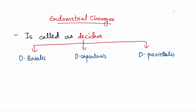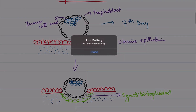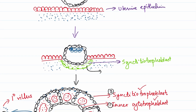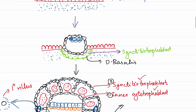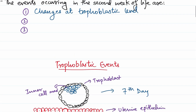The decidua basalis is where the embryo invades — the part of uterus where the embryo invasion occurs during implantation. The decidua capsularis is the endometrium that covers or surrounds the embryo after implantation — the immediate part of endometrium surrounding the embryo. The decidua parietalis is the rest of the uterine wall. In the figure: the decidua basalis is below, decidua capsularis covers the area over the embryo, and decidua parietalis is the remaining uterine wall.